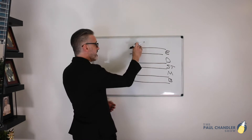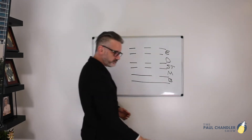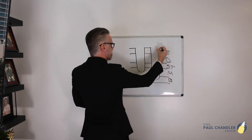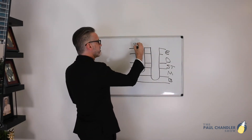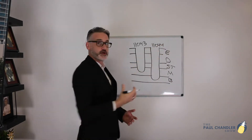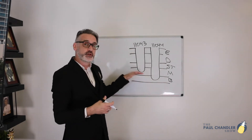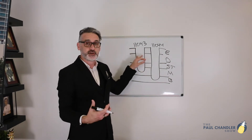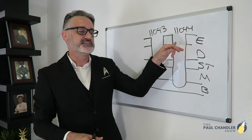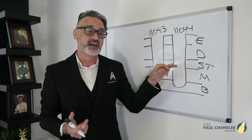Let's say we did two different debridements — one going down to the muscle area, and another going down to the bone. The code for going down to the muscle is 11043, and 11044 for going down to the bone. Code 11043 says debridement down to the muscle layer, but includes the epidermis, dermis, and subcutaneous tissue — everything from the muscle layer on up. Code 11044 includes going down to the bone, but also includes everything above it: epidermis, dermis, subcutaneous tissue, and muscle.